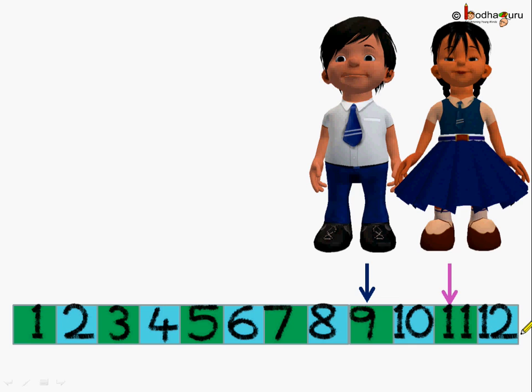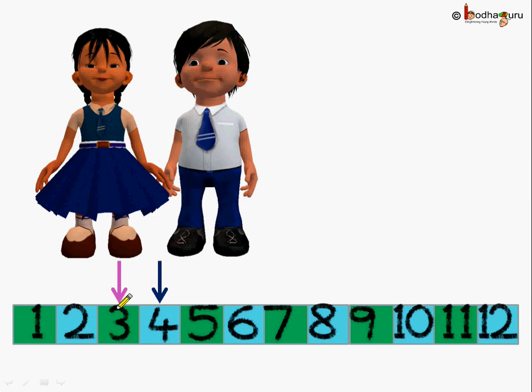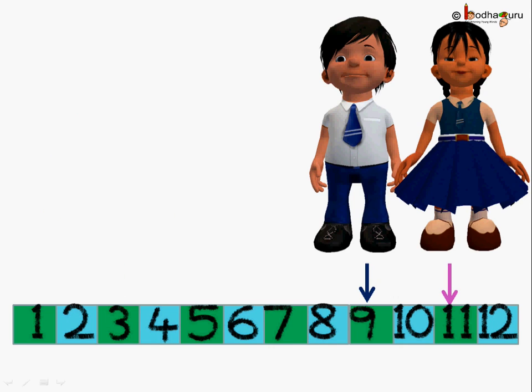And Khushi hopped till the number 11 square. What else they could know? See, the first time Aman was ahead of Khushi by just one square. Next time it was Khushi who was ahead of Aman by two squares.